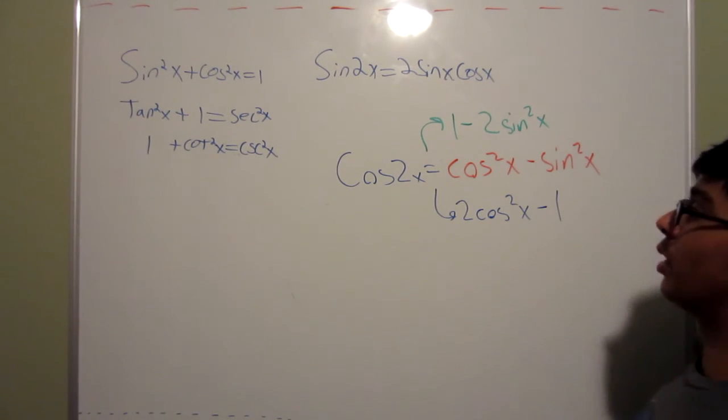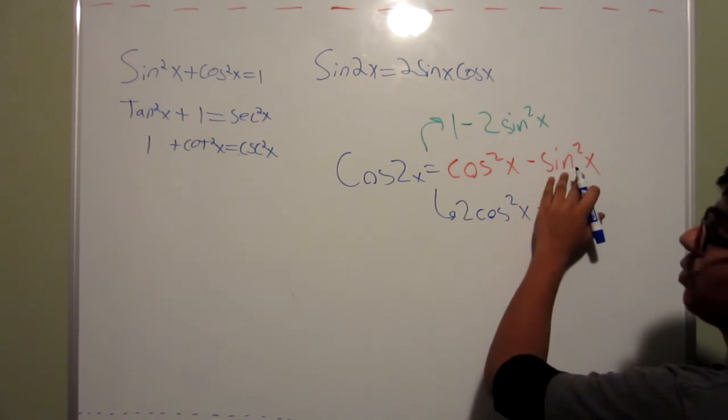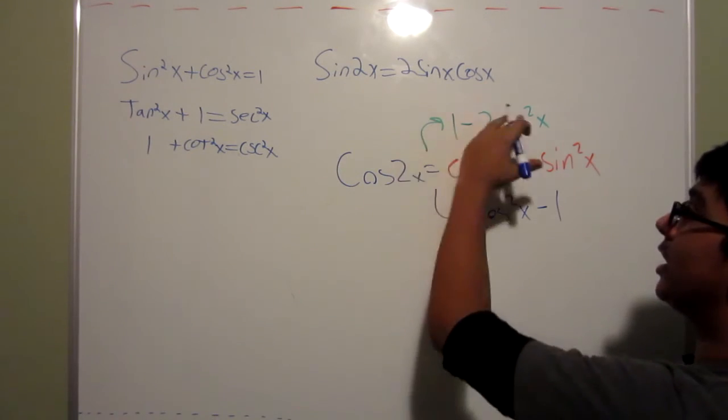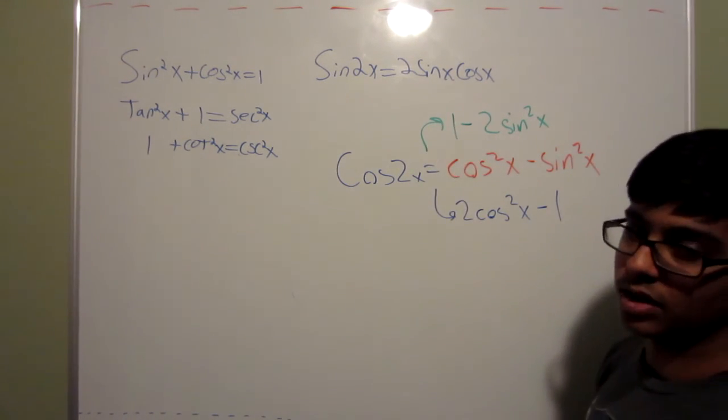It's a lot easier to remember. If you remember, you can just replace either cosine squared x and sine squared x with the different forms of each two. You can get each formula easier that way instead of remembering each of these as separate formulas.